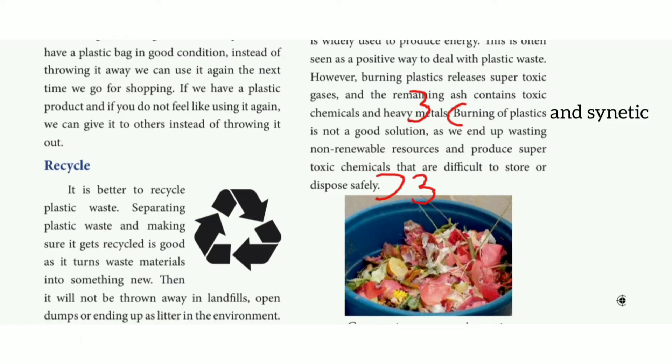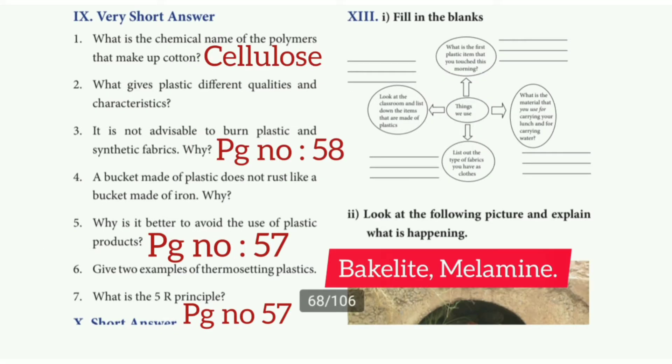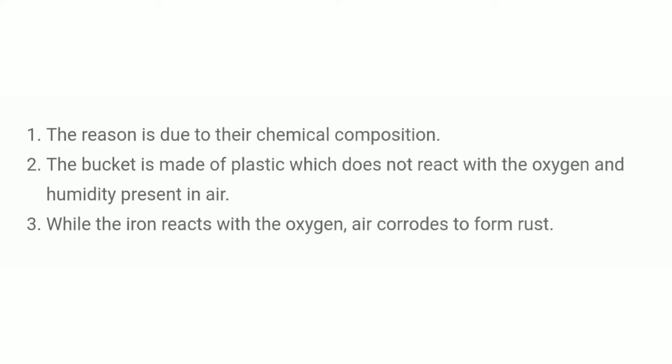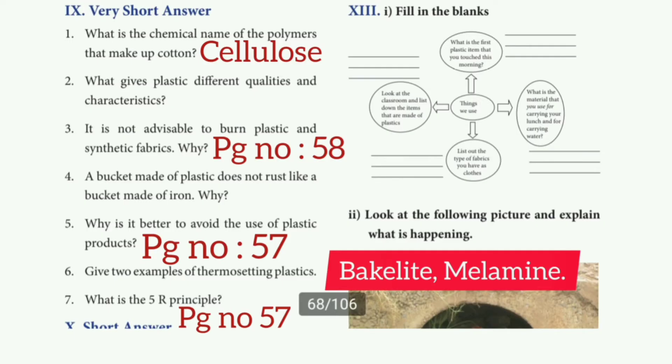Fourth question: a bucket made of plastic does not rust like a bucket made of iron. The reason is due to their chemical composition. The bucket made of plastic does not react with oxygen and humidity present in air, while iron reacts with oxygen and air to form rust.